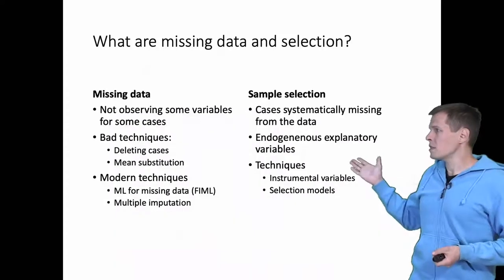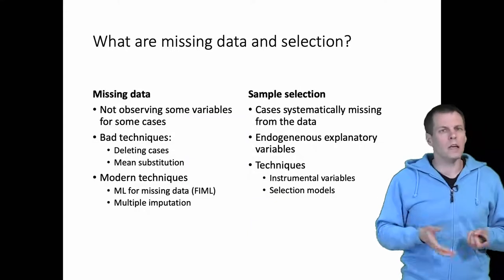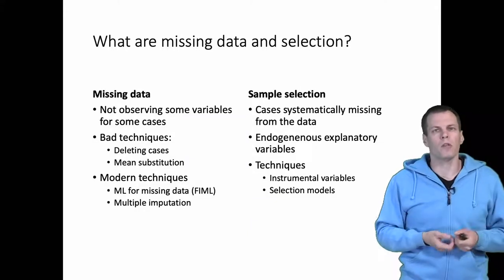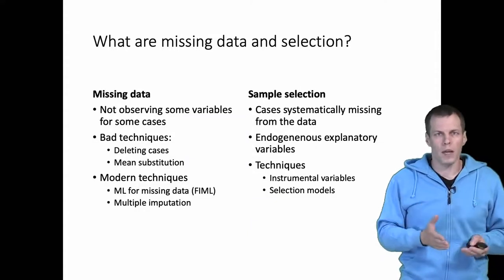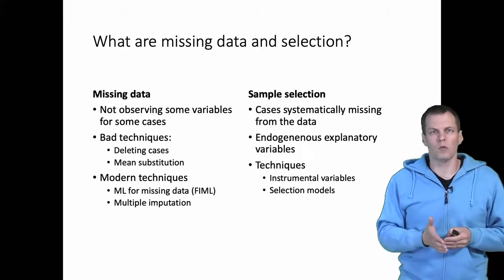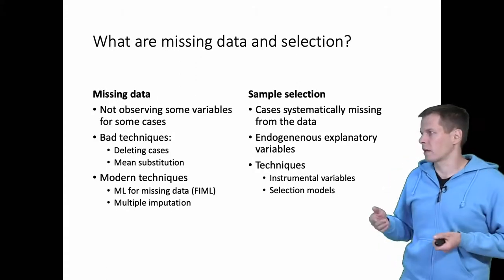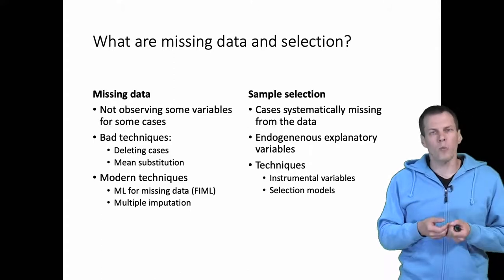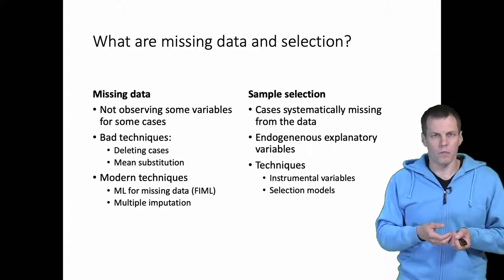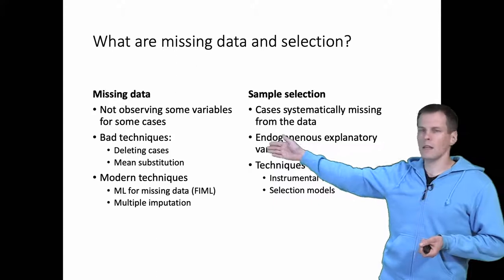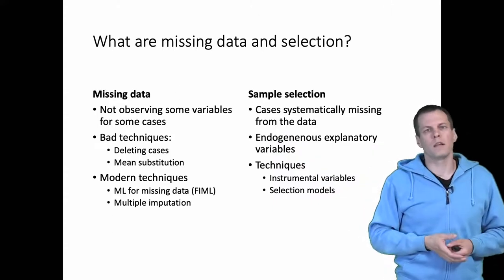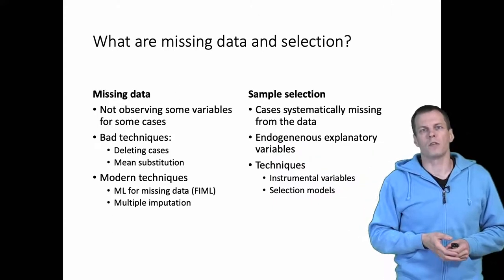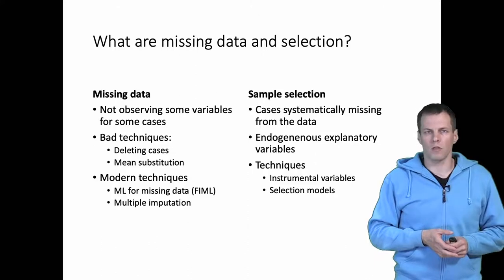So what is missing data and what is selection? Missing data refers to our typical scenario where we have some cases and some variables that don't have data for some of the cases. There are a couple of techniques that people commonly apply that are bad. First, deleting cases—unless the missingness is random and there is not a lot of missingness, it's not a good idea.